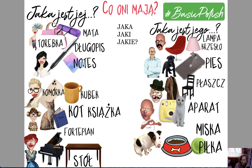So JAKI for masculine. Notes — notebook. Jaki jest jej notes? — What's her notebook like? Her notebook is pink and blue — double color. Jej notes jest różowo-niebieski. I'm describing a masculine noun.